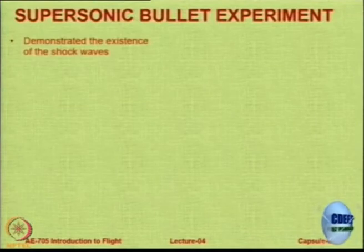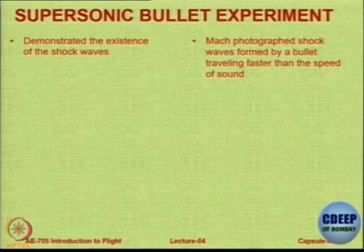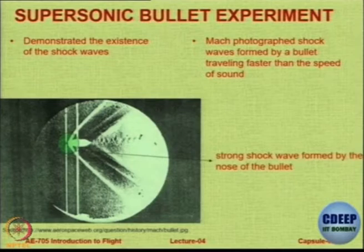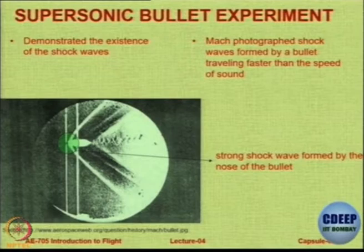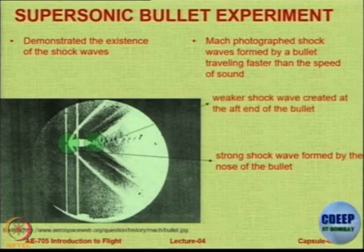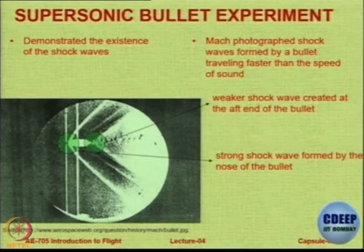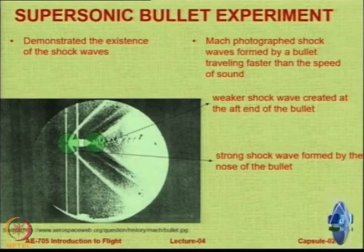So what did he do? Basically he showed the existence of shock waves and photographed the shock waves formed by the bullet. You notice in the nose there is a strong shock wave which is also curving at the nose and then tapering back. Then there are weaker shock waves at the aft end of the bullet because the end of the bullet is not flat — it has some conical kind of shape — so there are going to be weak shock waves created at the end.